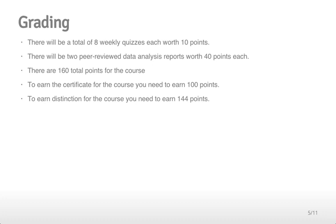Grading for the class will be on the basis of quizzes and data analyses. There will be a total of 8 weekly quizzes, each worth 10 points. And there will be 2 peer-reviewed data analysis reports, worth 40 points each. So in total there are 160 points for the course. To earn the certificate for the course, you need to earn 100 of the 160 points. And to earn distinction, you need to earn 144 of the 160 points.